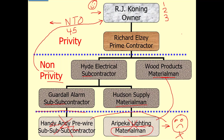That covers third-tier privity, material man to material man, and who has lien rights. A material supplier to another material supplier — even if they're a material man — still has no lien rights, because they're still a material man to another material man. They're still in the position of being a distributor. It's not necessarily about where they are in the line; it's that they are a material supplier to another material supplier. That would be like the supplier you buy your pipe from, and then allowing the people they buy the pipe from to lien you. It's too far removed, so they stopped it.